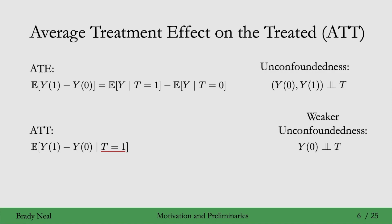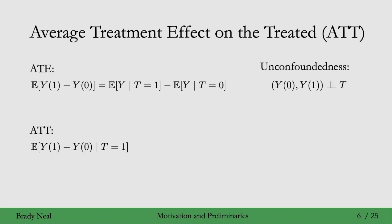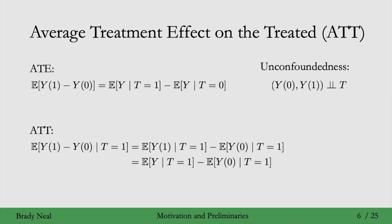With this estimate, we don't need to make as strong of an unconfoundedness assumption. Here we only need to assume that the potential outcome Y0 is independent of treatment, rather than both potential outcomes. Under this assumption we get the same identification, and we'll prove that quickly since it's only a few steps. The first step is the usual application of linearity of expectation. Then, looking at the first term — which is causal because it has a potential outcome Y1 given T equals 1 — because the potential outcome matches the treatment we're conditioning on, we can use consistency to identify that, turning it into a regular conditional expectation.